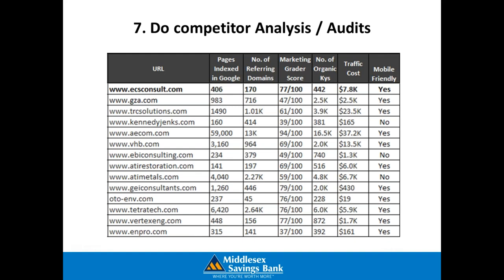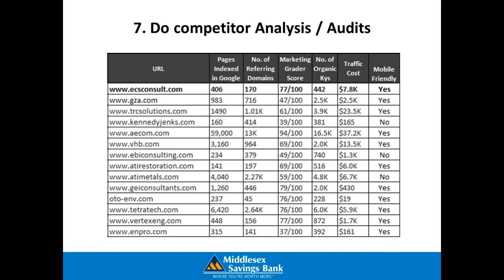At number seven, do competitor analysis and audits. At my digital marketing agency, we have about a dozen important competitive analysis reports that we do for every client, even our programs under $1,000 a month. One overview report shows the number of pages indexed in Google — you can check that by searching with the advanced operator site colon followed by your domain name, with no space. That shows how many pages Google understands you have and how many pages their robot has crawled. Key metrics include the number of pages indexed, referring domains or unique backlinks, the HubSpot marketing grade, organic keywords driving traffic, the traffic cost if you had to buy those keywords as Google ads, and if the website is mobile friendly.